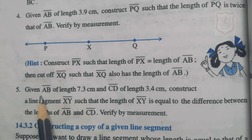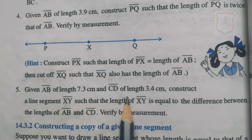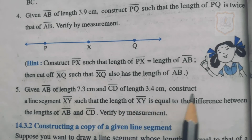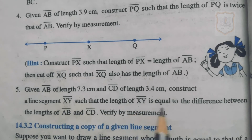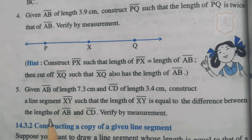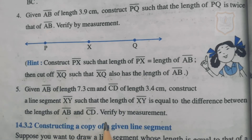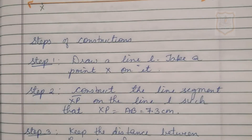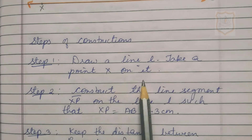Question 5: Given line segment AB of length 7.3 centimeter and line segment CD of length 3.4 centimeter, construct line segment XY such that the length of XY equals the difference between AB and CD. Verify by measurement. Solution for Question 5 — Steps of Construction. Step 1: Draw a line L and take a point X on it.